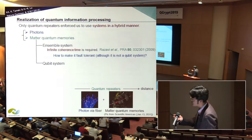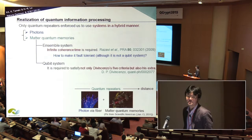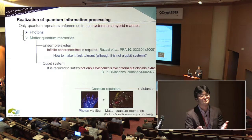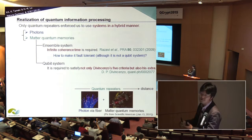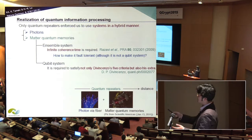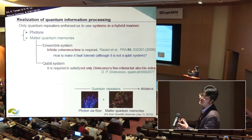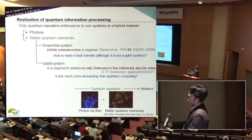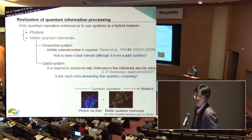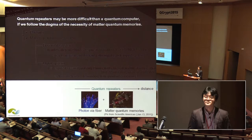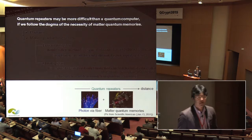Therefore, we cannot find a good way to make the atomic ensemble a fault-tolerant quantum memory, because this is not a real qubit system, just a pseudo qubit system. Some theorists suggest we need to use a matter qubit system. However, all the conventional theory requires us to use a matter qubit-based quantum computer at each repeater node. Moreover, such a matter qubit-based quantum computer should have an efficient coupling with photons. Therefore, the matter qubit requires satisfying not only DiVincenzo's five criteria for universal computation, but also his really difficult extra criteria about efficient coupling with photons. I cannot say whether the quantum repeater is really much easier than the matter qubit-based quantum computer at this point.